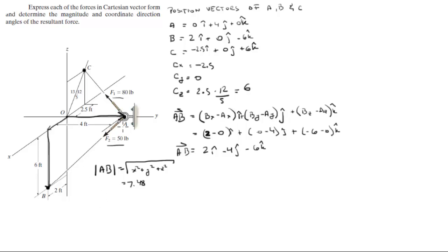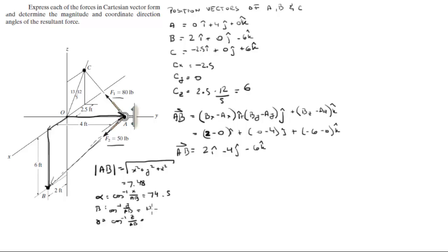Now we're going to find the direction angles of this vector — not the force, the vector. The direction angles are equal to the cosine inverse of x over the magnitude, cosine inverse of y over the magnitude, and cosine inverse of z over the magnitude. The direction angles come out to be 74.5°, 122.3°, and 143.3°. Since F2 is along this line, these are also the direction angles for F2.